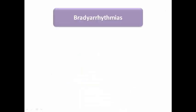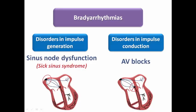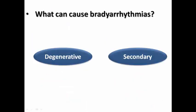We usually divide bradyarrhythmias into disorders in impulse generation, which are called sinus node dysfunction, and disorders in impulse conduction, known as AV blocks. We know that these can be caused by primary causes — usually degeneration in the SA node or AV node — or secondary causes.